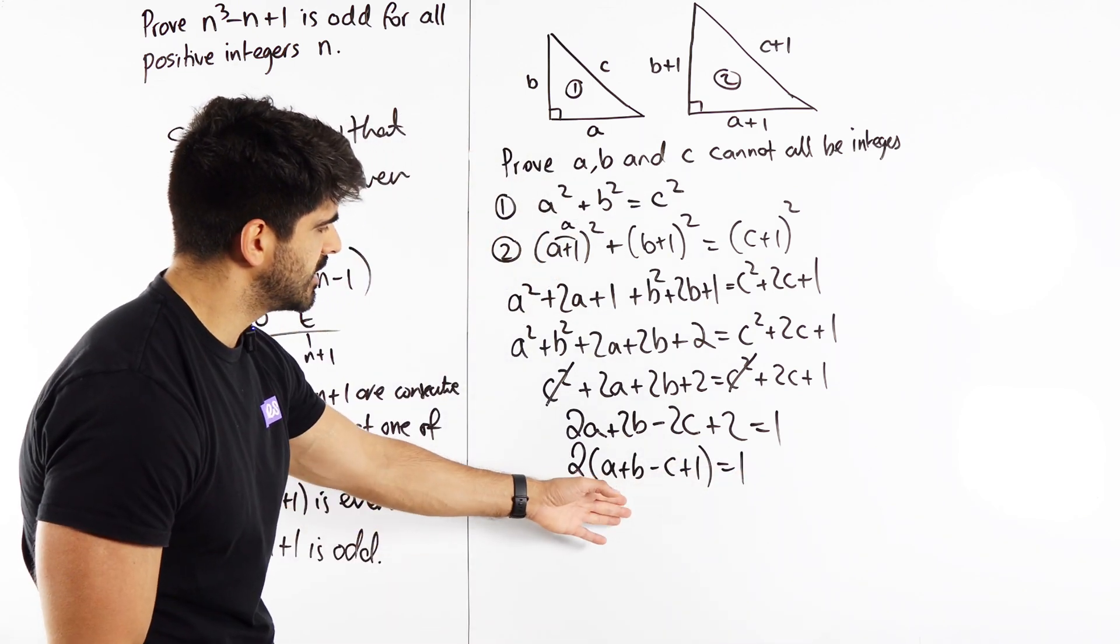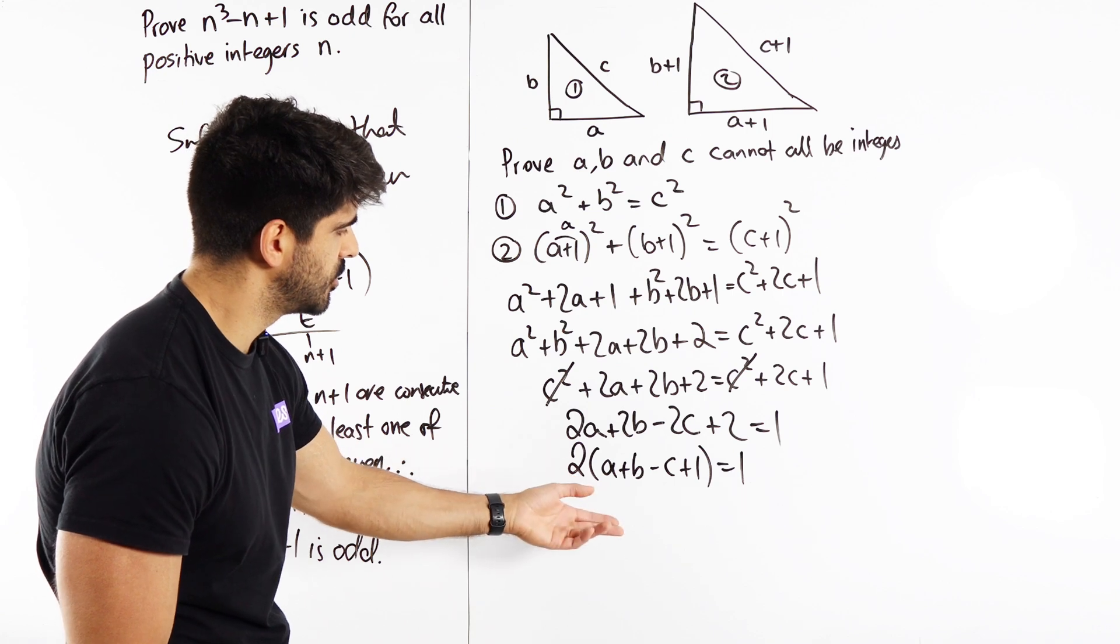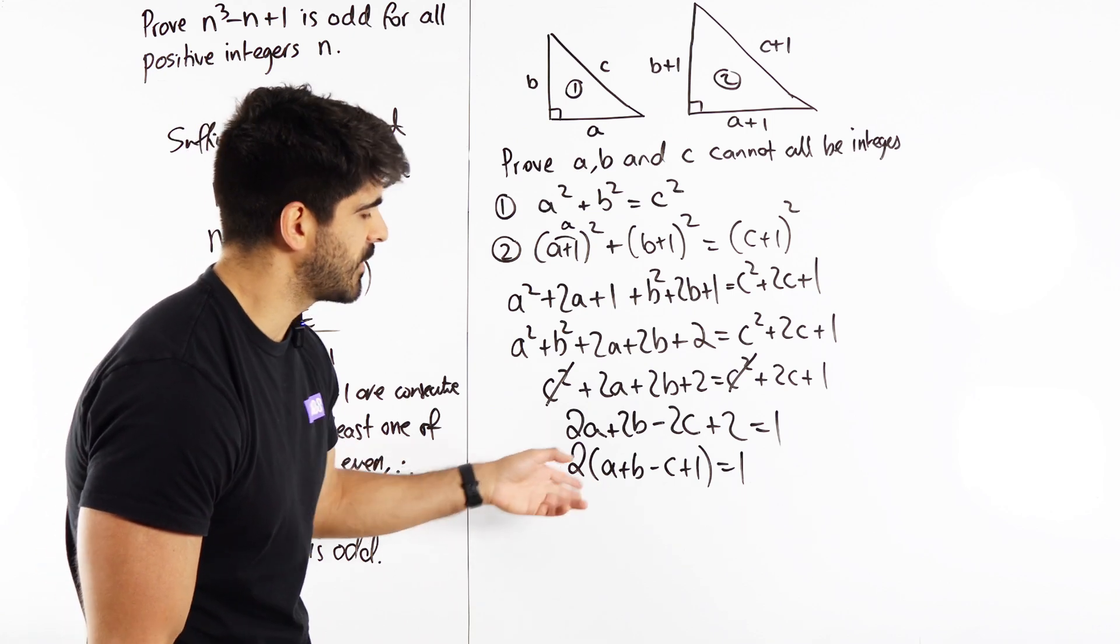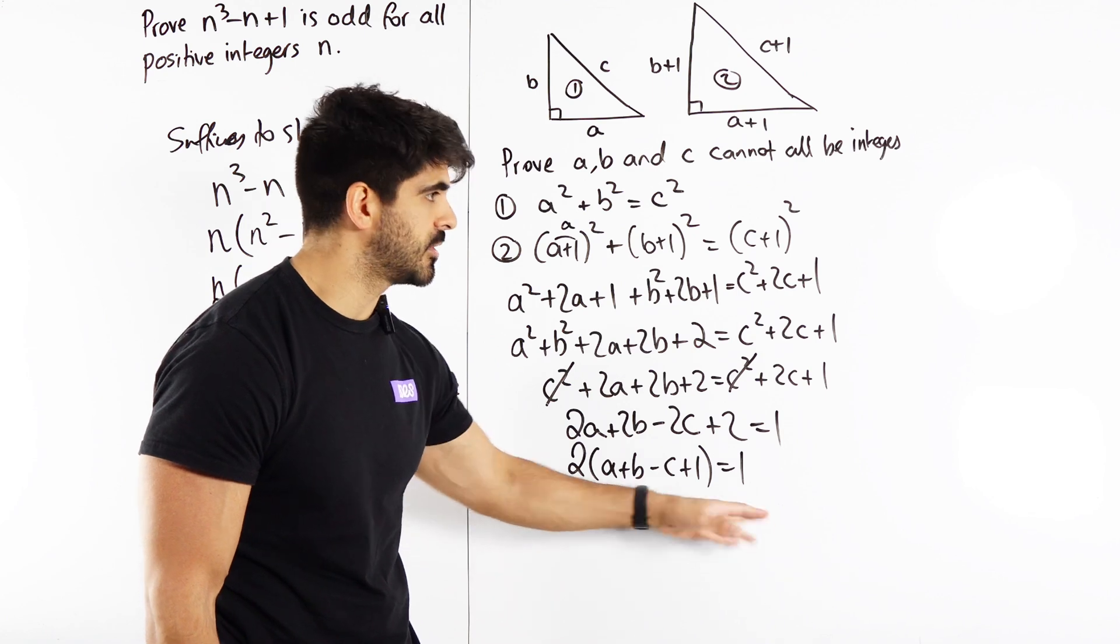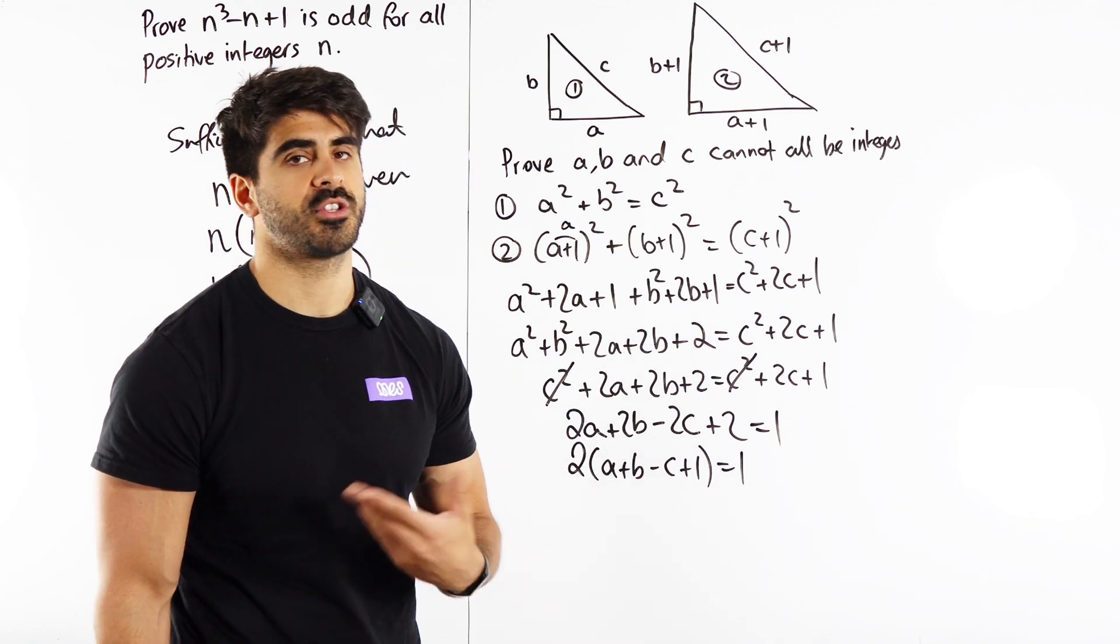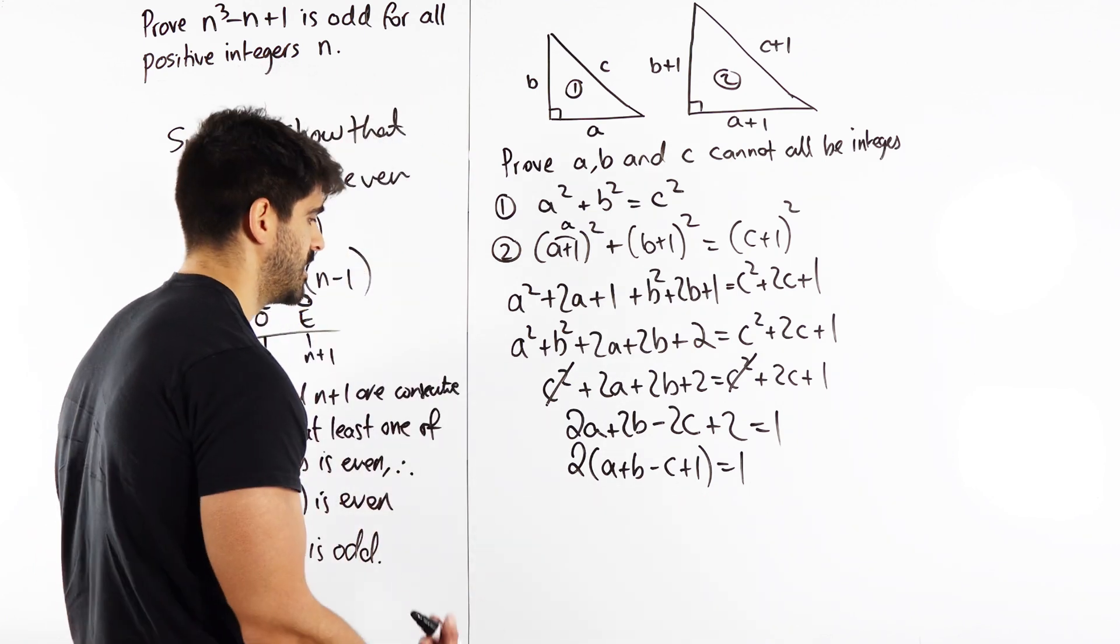The left hand side is a multiple of 2, which means if A, B and C are integers, that would be even, but the right hand side is 1. That's odd. That's a contradiction. That doesn't make sense.